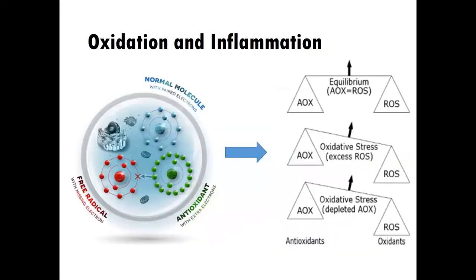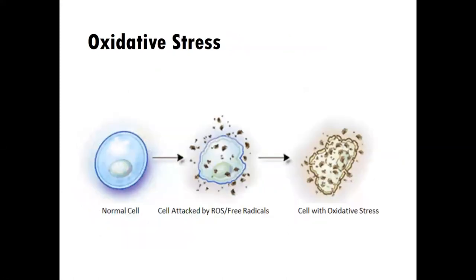We'll then learn about oxidation and its role in inflammation — free radicals and antioxidants, those normal typical processes, and what happens when that process is disrupted and an imbalance causes oxidative stress. You see here a graphic showing that when a normal cell is exposed to too much oxygenation and free radicals, it causes the breakdown of the cell, which is obviously very problematic.